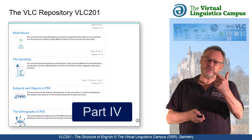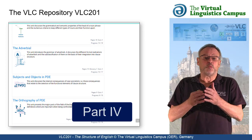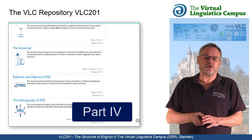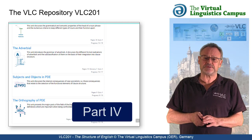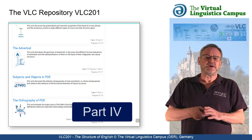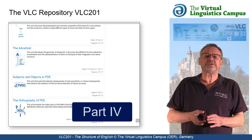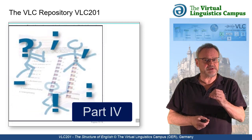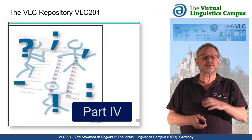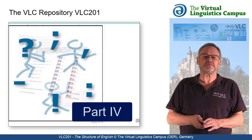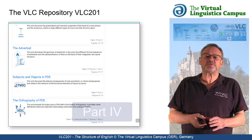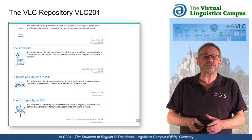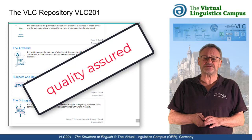The final two units are special. One deals with the principles of subject and object selection in present-day English. And a second one with an often neglected part of grammar, that is orthography, hyphenation and punctuation. This list of units is growing, updated and quality assured on a regular basis.